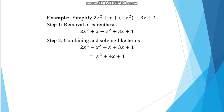Here is an example. Simplify: (2x² + x) + (−x² + 3x + 1). Step one: remove the parentheses. The expression becomes 2x² + x − x² + 3x + 1.